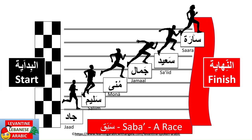Let's do it together. سارة هي الأولى — we can't say الأول because she's female, so سارة هي الأولى. سعيد هو التاني — the second. جمال هو التالت — the third. مونة هي الرابعة — we can't say الرابع because she's female, so هي الرابعة. سليم هو الخامس وجاد هو السادس — he's the sixth. And we can also say he's the last: هو الأخير. الأخير means the last.